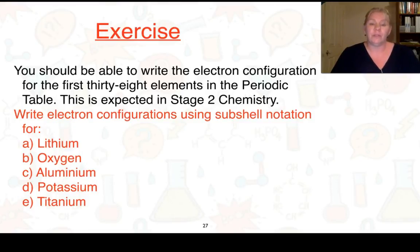So I want you to take some time. You should be able to write the electron configuration using our subshell notation for the first 38 elements in the periodic table. That's what's going to be expected in stage 2 chemistry. And so Mr. Vu and I are going to expect that this year as well. At this stage, we'd like you to write the electron configurations using subshell notation for Lithium, Oxygen, Aluminium, Potassium, and Titanium. So take some time to do that, and then we'll come back to the video.